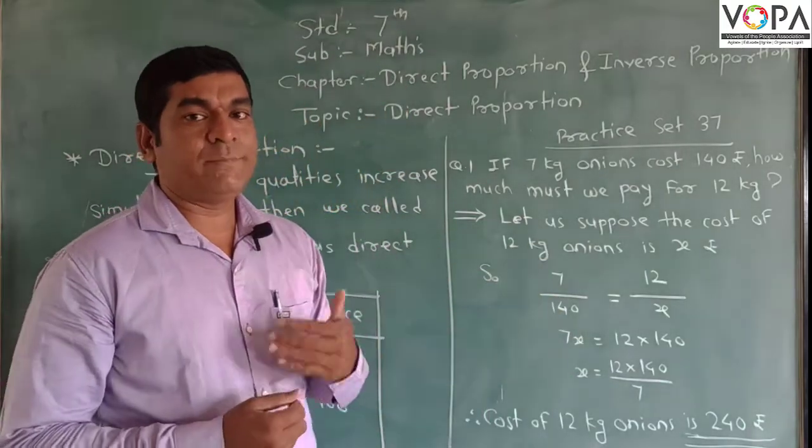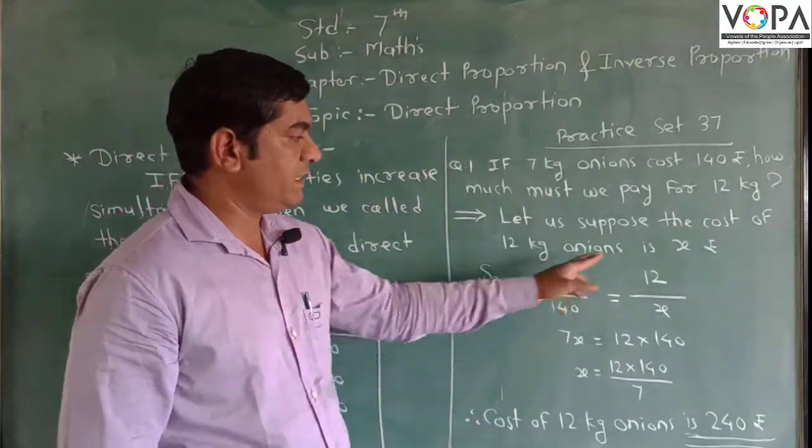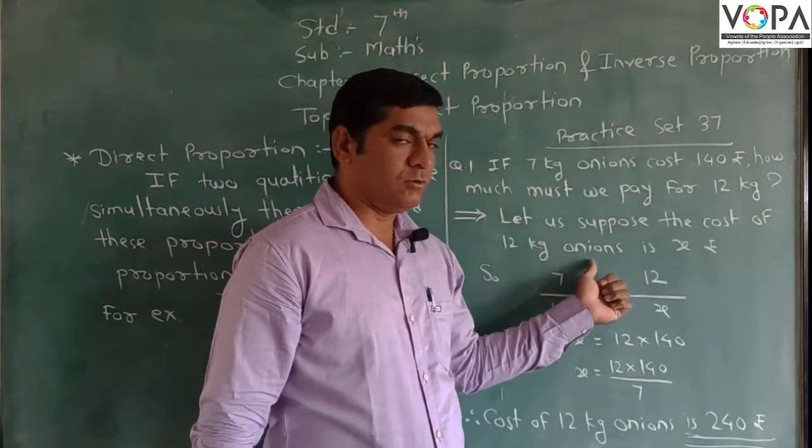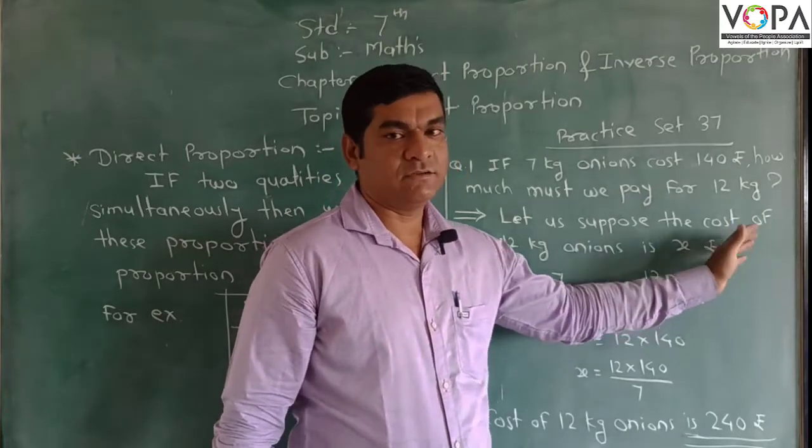So, let's take the amount we pay for 12 kg as x. Let us suppose the cost of 12 kg onions is x rupees.